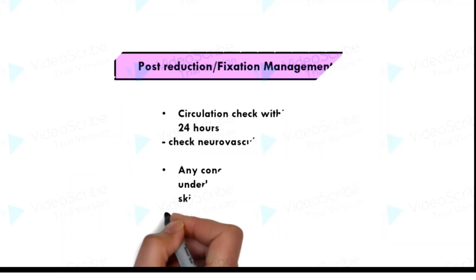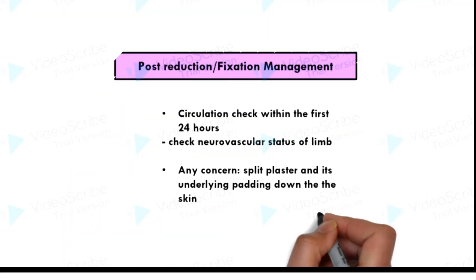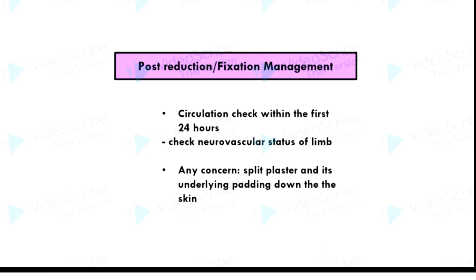Post-reduction and fixation management: Do a circulation check within the first 24 hours and check the neurovascular status of the limb. If there are any concerns, split the plaster as well as the underlying padding down to the skin.